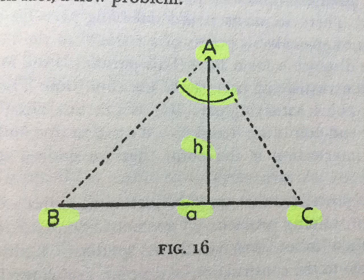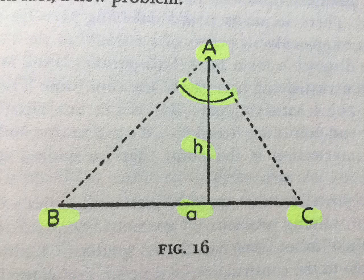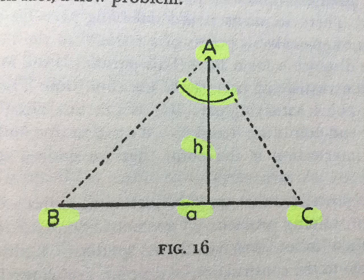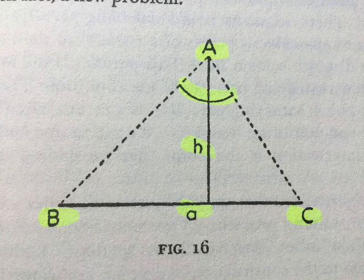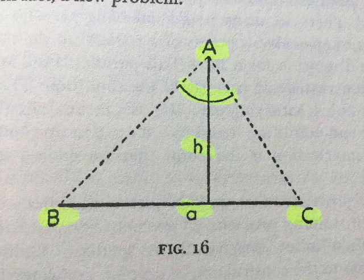For example: Construct an equilateral triangle being given a side. Construct an equi-angular triangle being given a side. The difference of the two statements, which is slight in the present example, may be momentous in other cases.